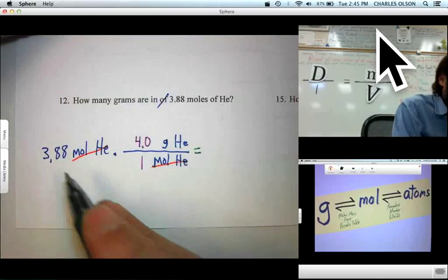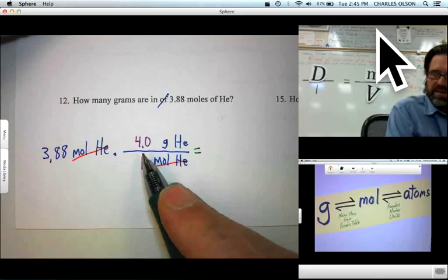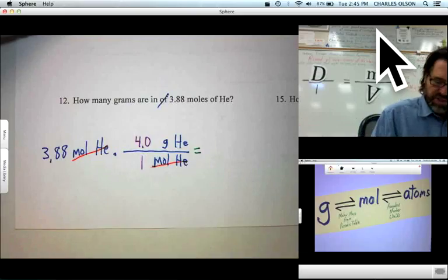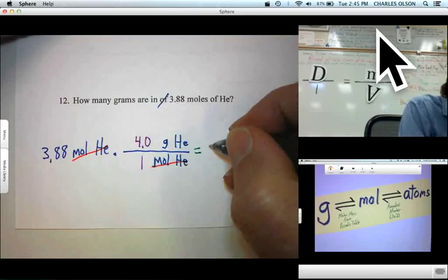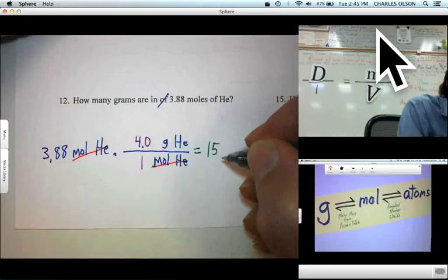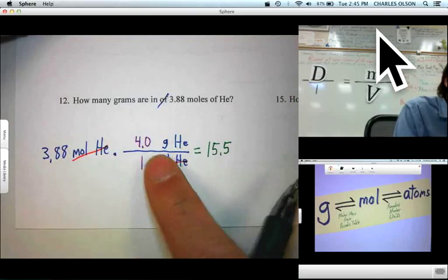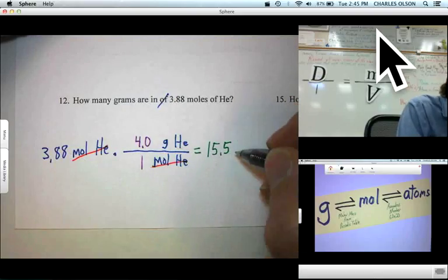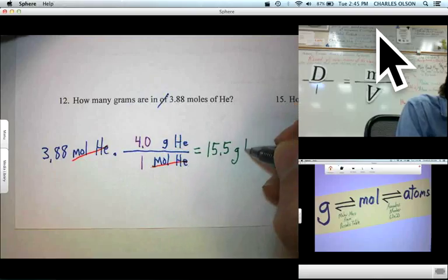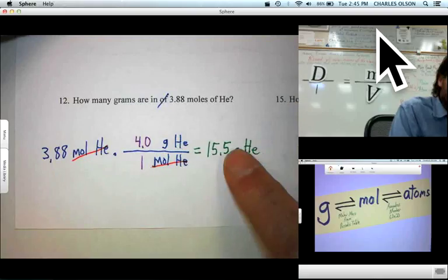3.88 times 4.0 comes to 15.52. But we're going to give 3 sig figs since we started with 3 sig figs. And conversion factors don't affect sig figs. And our units, grams of HE. And there's our first answer.